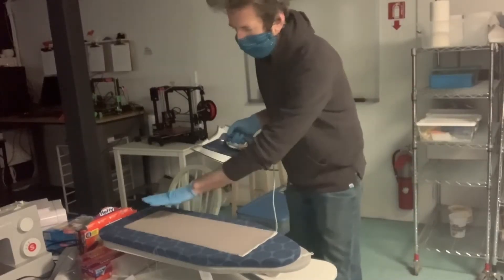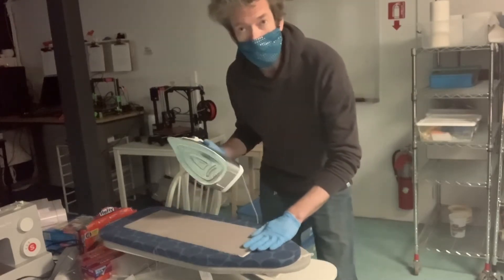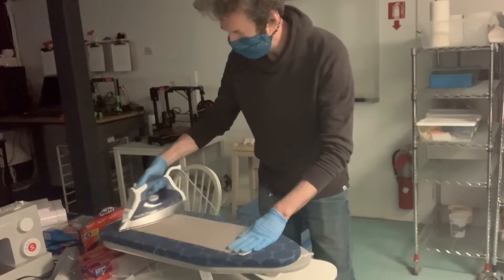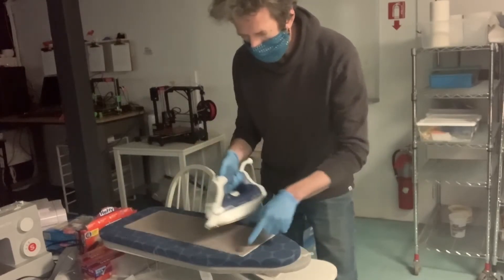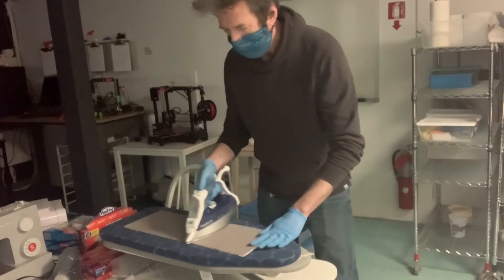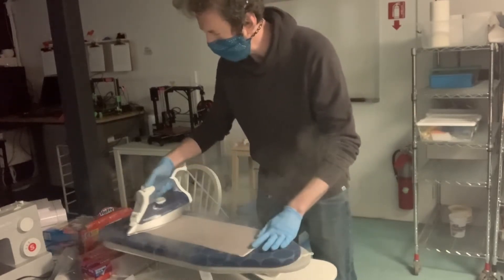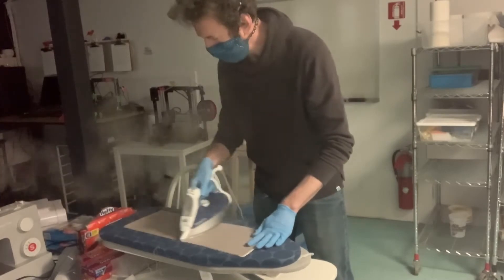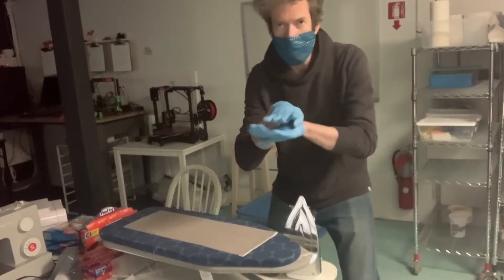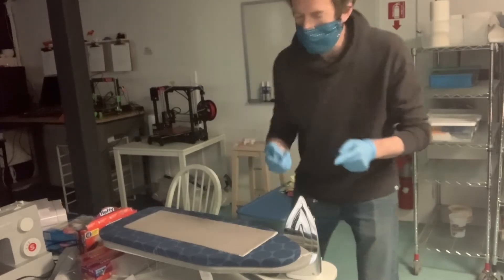We're just going to place the fabric here on the ironing board and give it a little steam. Make sure your edges are lined up. Having it have a little steam on it keeps it nice and flat, because if you have creases in the fabric, it may distort the shape when it's cut.